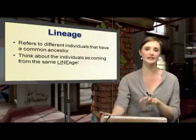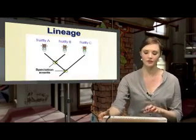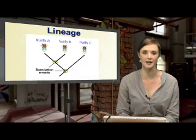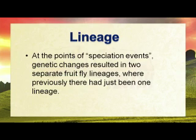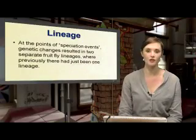So let's look at a section of a tree of life of a certain species of fruit fly. Now, if you have a look here, we've got fruit fly A, B, and C, and there are sections where their branches intercept. And we call these speciation events. What that means is that at these points of speciation events, genetic changes resulted in two separate fruit fly lineages, where previously there had just been one lineage. And you can see that very clearly from the diagram.